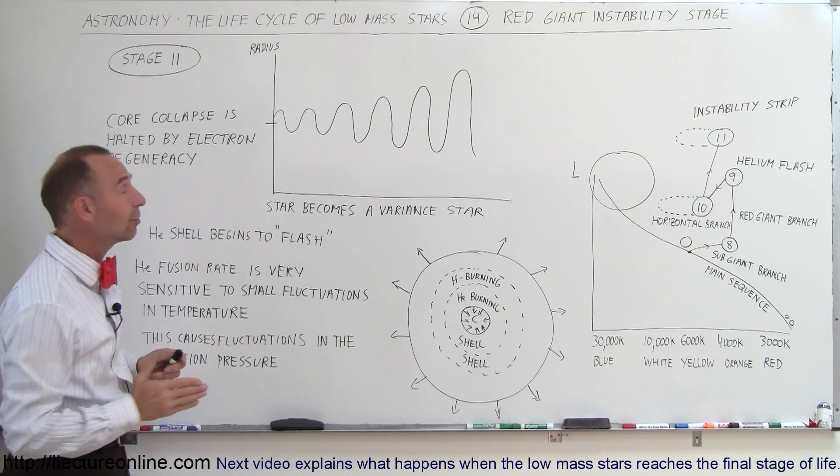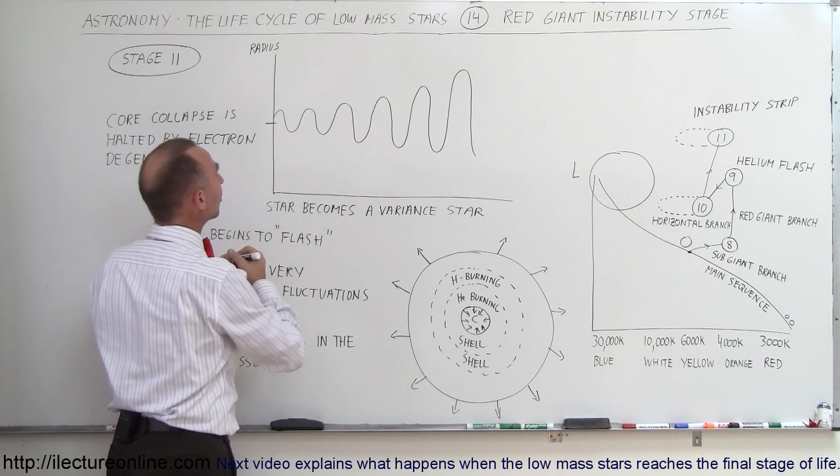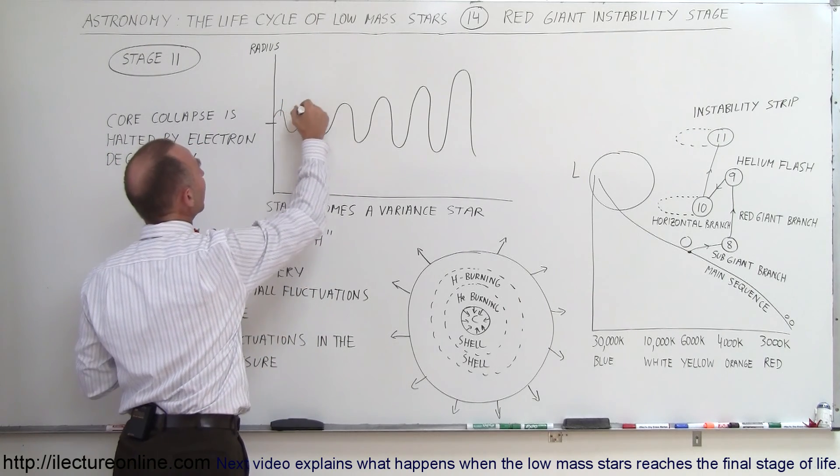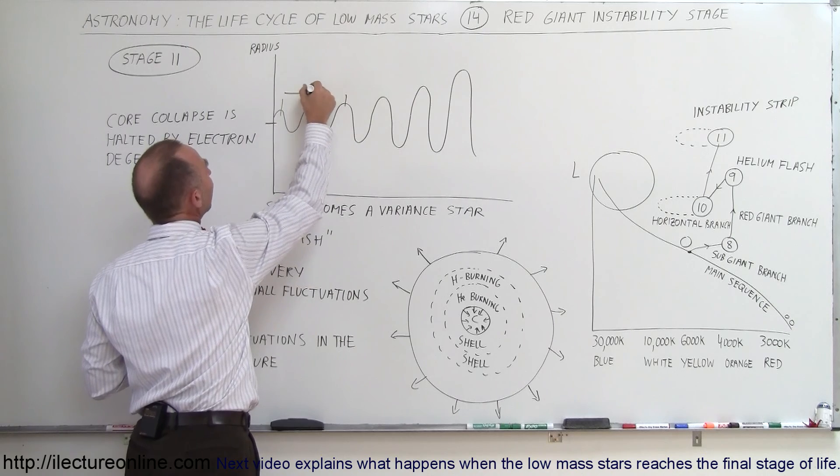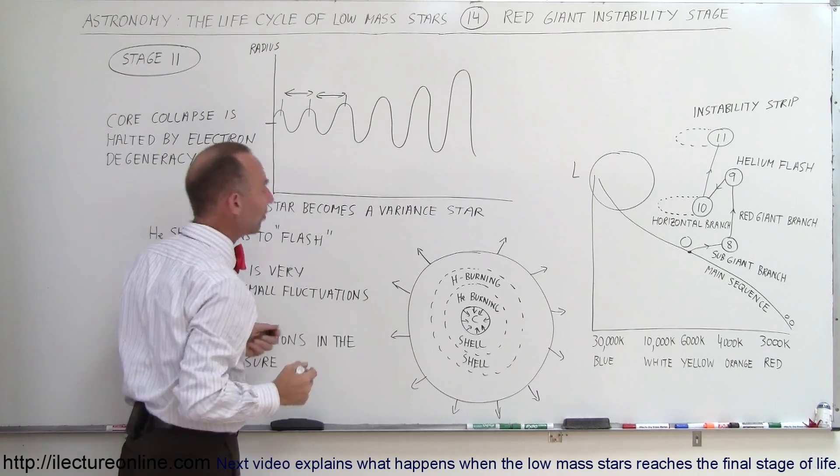What is amazing about these variable stars is that the period of fluctuation, the time it takes from one peak to the next peak, is very regular in periodicity.